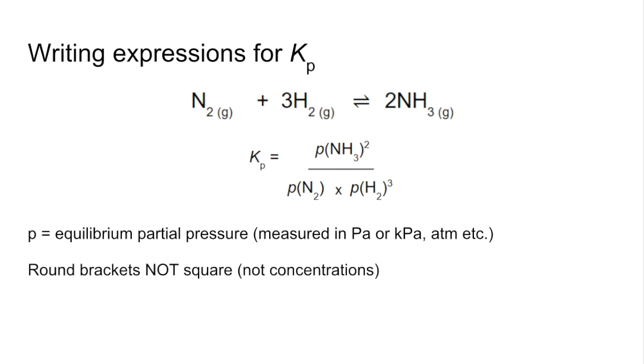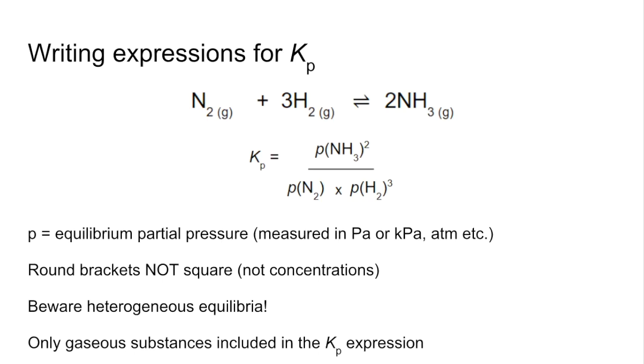We use round brackets, not square ones, because these aren't concentrations, they're partial pressures. And beware heterogeneous equilibria - we only include gaseous substances in Kp expressions.